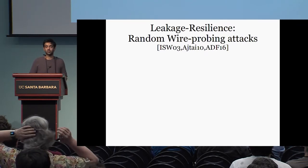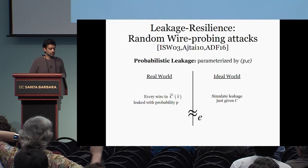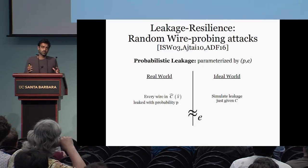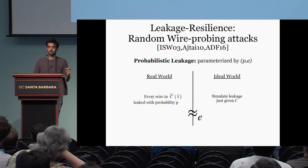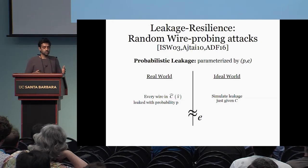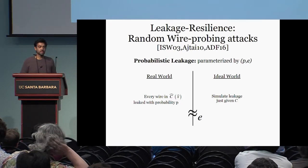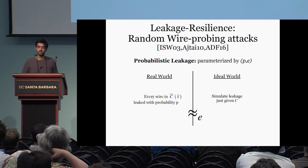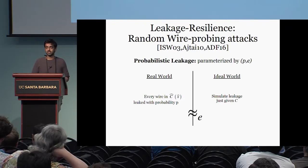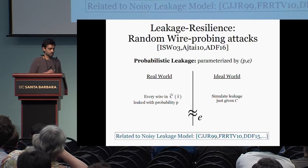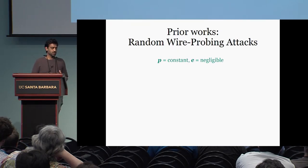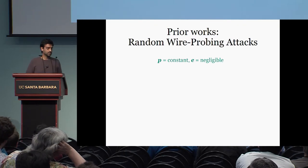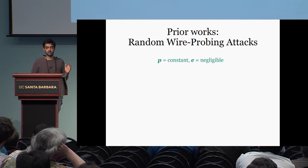So that was for worst-case probing attacks. Let me move to a different setting: random wire probing attacks. In this setting, the adversary gets every wire value with some probability P. In the ideal world, we want to show a simulator that can simulate this leakage given only the circuit C. We also allow for a small simulation error E. This model is related to the noisy leakage model studied in many prior works. The regime I'm interested in is P constant and E negligible in the circuit size.